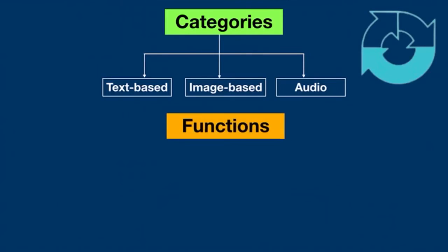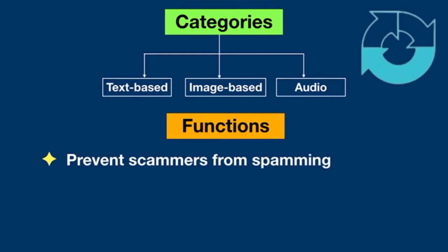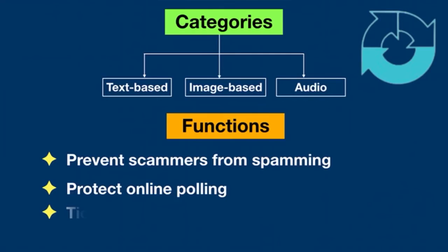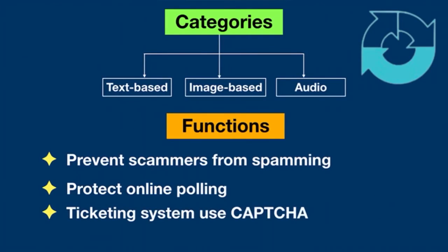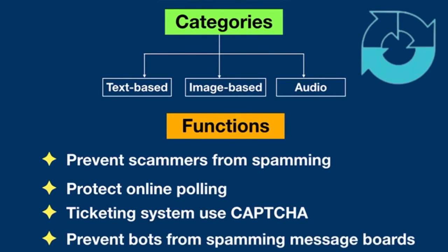The main functions of CAPTCHA are: it prevents scammers or bots from spamming registrations to create fake accounts; it protects online polling and ensures that each vote is entered by a human; ticketing systems use CAPTCHA to limit scalpers from purchasing large numbers of tickets for resale; and CAPTCHA prevents bots from spamming message boards, also playing a vital role in reducing online harassment.